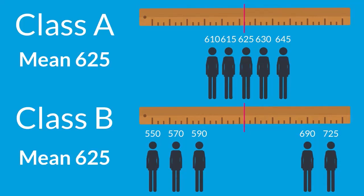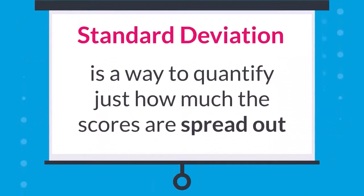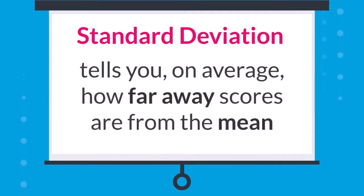The scores of Class A are all very close to the mean, but the scores of Class B are more spread out. The standard deviation is a way to quantify just how much the scores are spread out and tells you, on average, how far away the scores are from the mean.